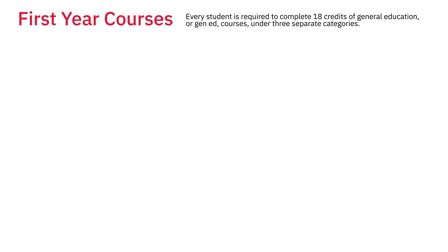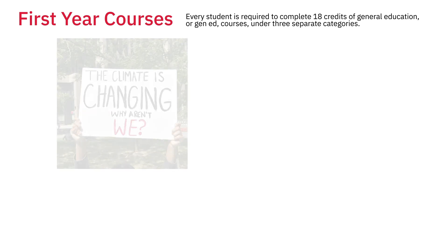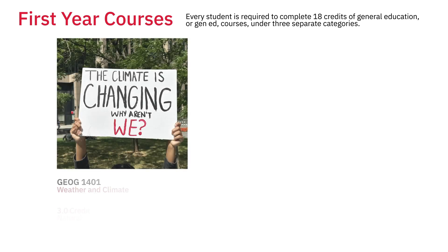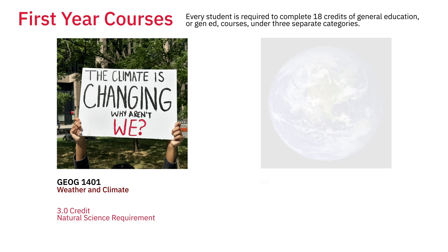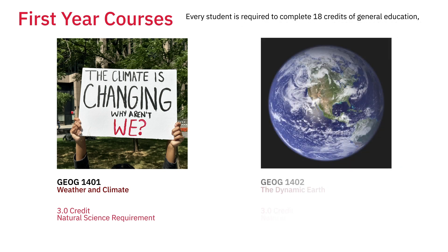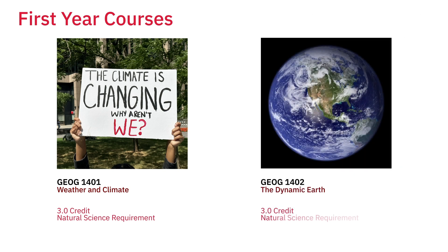For your six-credit Natural Science Gen Ed requirement, you will be enrolling in Geography 1401, Weather and Climate, and Geography 1402, The Dynamic Earth.